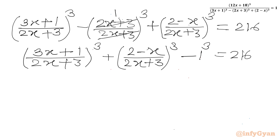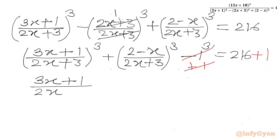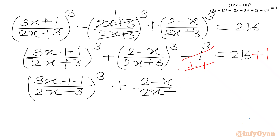Now we will add 1 to both sides, so we can cancel the plus and minus 1 from our left hand side. We will get the equation: [(3x+1)/(2x+3)] whole cube plus [(2-x)/(2x+3)] whole cube equal to 217.